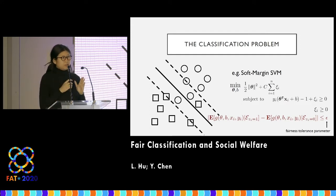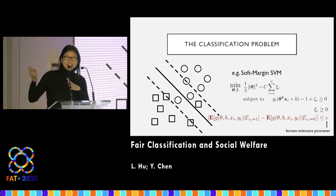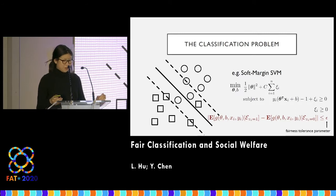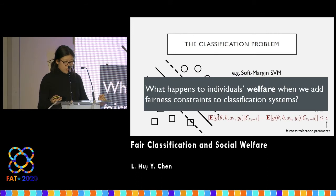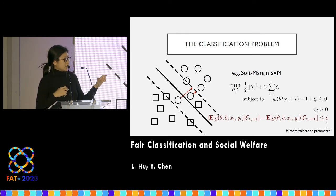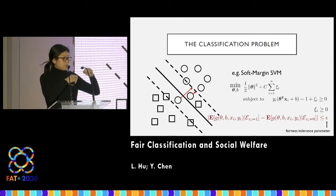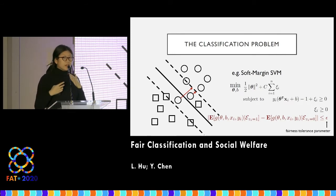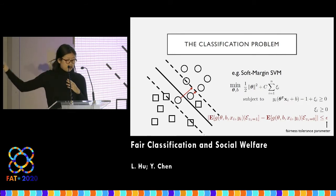When epsilon is zero, you're requiring some kind of strict equality — that's maximally fair. When epsilon is one, you're not requiring any fairness constraint at all. The question is: what happens to individuals' welfare when we add those fairness constraints into the classification system? Adding the fairness constraint changes the actual optimization problem, shifting this boundary, and we want to see what that does in the welfare space.